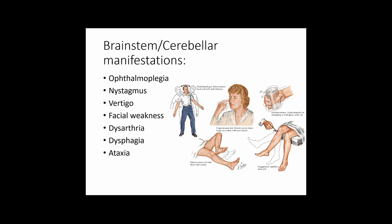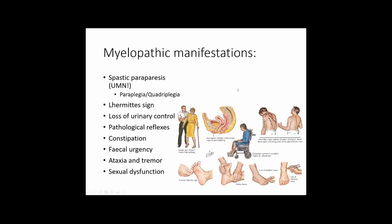Ataxia occurs if the cerebellum is affected. The DANISH mnemonic describes cerebellar disease manifestations: dysdiadochokinesia, ataxia, nystagmus, intention tremor, slurred speech, and hyporeflexia. Cerebellar signs include loss of coordination on finger-nose testing, wide-based gait with truncal ataxia, and intention tremor.